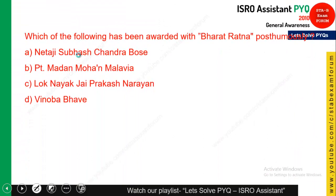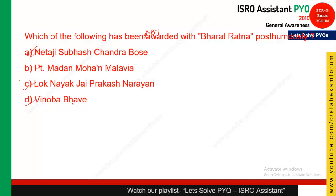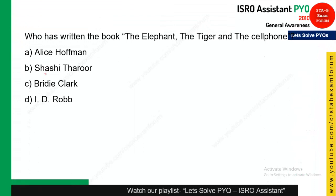The next question — I am not sure whether it is correct as stated. The question is: which of the following has been awarded with Bharat Ratna posthumously? Jay Prakash Narayan, Vinobha Bhave, and Pandit Madan Mohan Malviya have been awarded, but Netaji Subhash Chandra Bose was not awarded. So the question should be: which of the following has NOT been awarded Bharat Ratna posthumously? Netaji Subhash Chandra Bose should be the right answer. I am not very sure about this question — you can also have a look and tell us in the comment box.